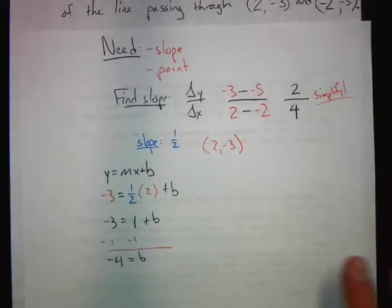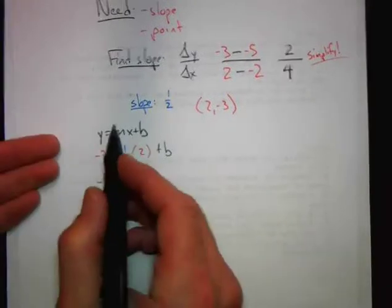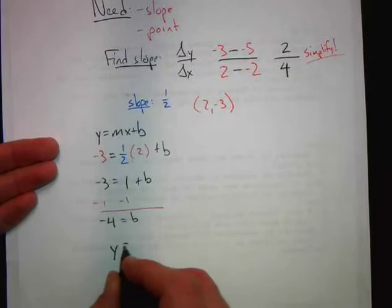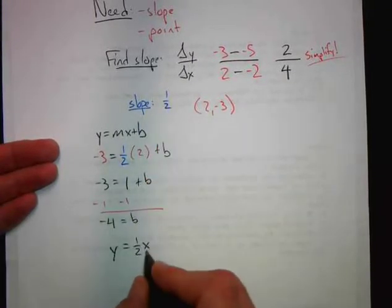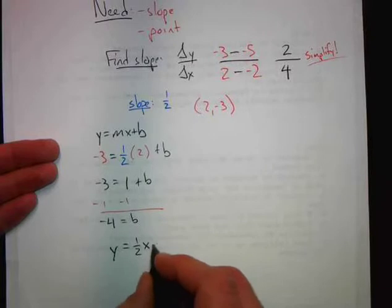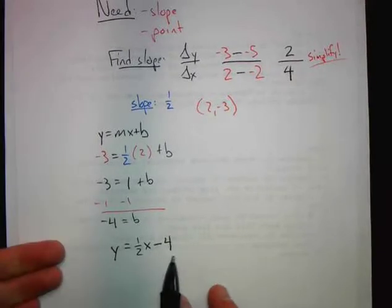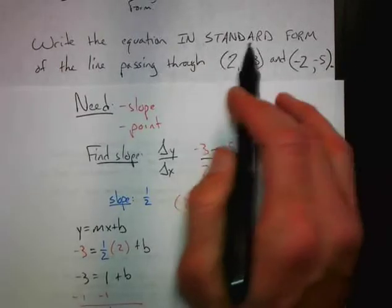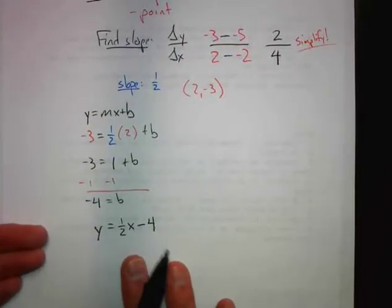With this piece of information, we still have to write our equation: y equals mx plus b. So we write: y equals 1/2 x minus 4. This is one way to write our equation. Now I know the directions say standard form — I'll get to that. I'm going to pause here on this method and show you a different method.